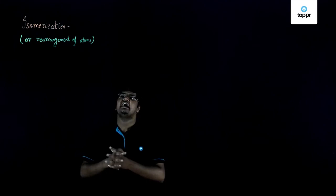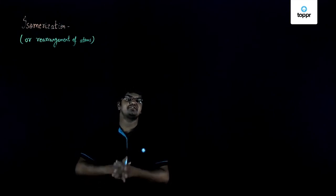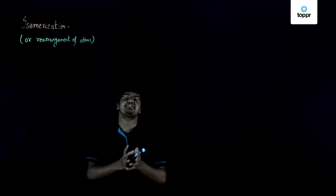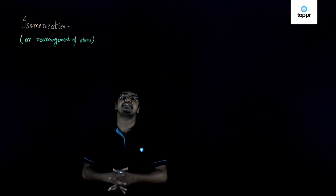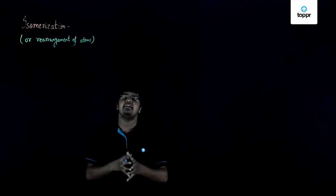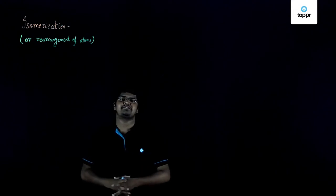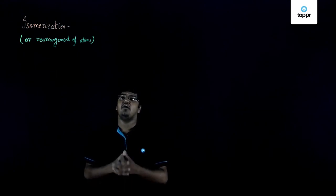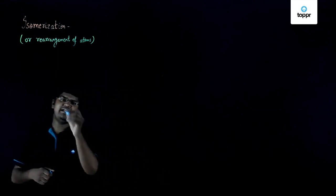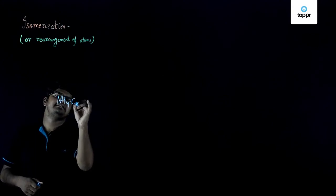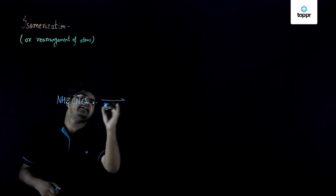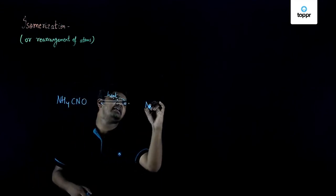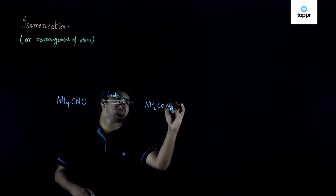Another type of chemical change is the isomerization reaction, or we can simply say rearrangement of atoms. It is a special type of reaction in which a chemical compound rearranges its position of atoms and gives rise to a whole new compound based on its molecular structure only. For example, if we heat ammonium cyanate, it gives us urea. Ammonium cyanate is given as NH4CNO and upon heating, it gives us urea which is NH2CONH2.